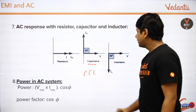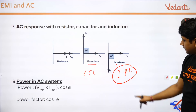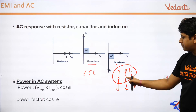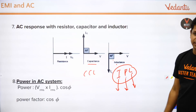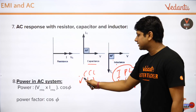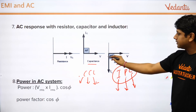A small shortcut: for capacitor, remember CCL — current leads. For inductor, remember IPL — inductor potential leads. So for a capacitor, current leads by 90 degrees; for an inductor, potential (voltage) leads by 90 degrees.